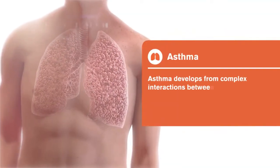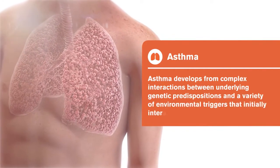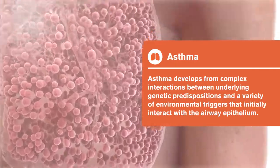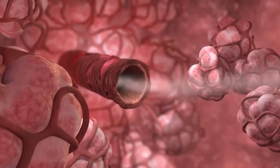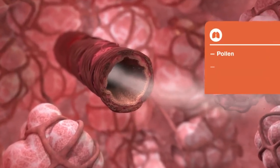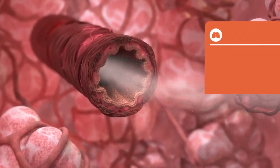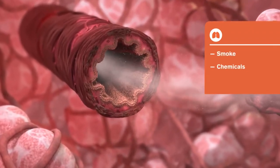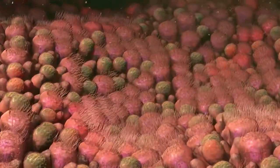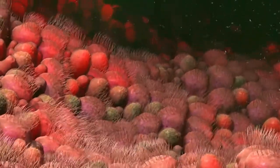Asthma develops from complex interactions between underlying genetic predispositions and a variety of environmental triggers that initially interact with the airway epithelium. The environmental stimuli that trigger asthma may be of allergic etiology, such as pollen, dust mites, or animal dander, or of non-allergic etiology, such as smoke, chemicals, or cold air. In asthma, the airway epithelium is structurally and functionally abnormal and more susceptible to these inhaled stimuli.